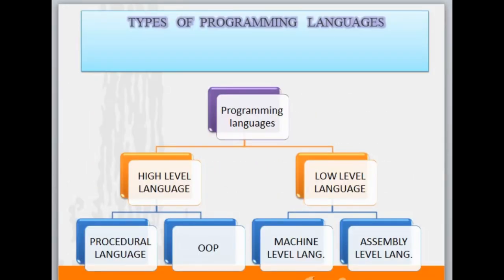Next we will talk about the types of programming languages. Programming languages can be categorized into two categories: high level language and low level language. High level languages, on the basis of their paradigm, can be categorized into two categories: procedural language and object oriented programming. Procedural language means the language in which the stress is given on the procedure — that means the functions. In object oriented programming, the stress is given on the objects.